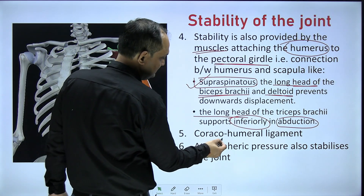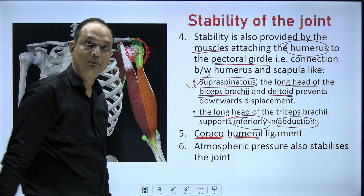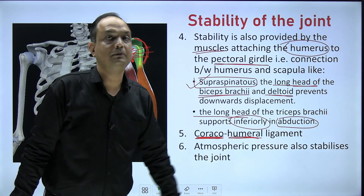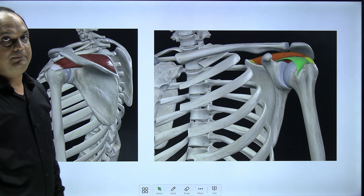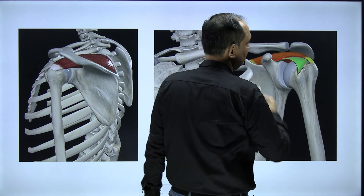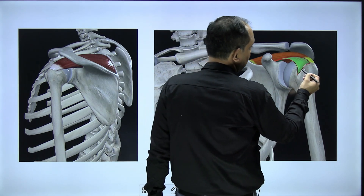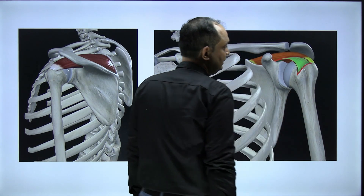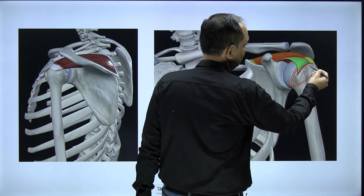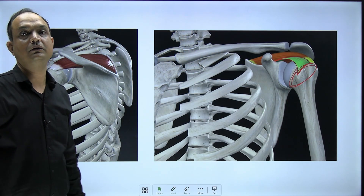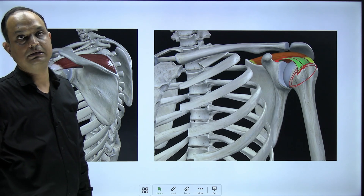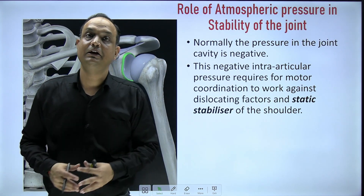The coracohumeral ligament connects the coracoid process to the humerus, providing support from the superior side. This ligament attaches to the lesser tubercle, the upper part of the greater tubercle, and along the anatomical neck of the humerus. It runs from the coracoid process toward the upper part of the tubercles. Atmospheric pressure also stabilizes the joint.